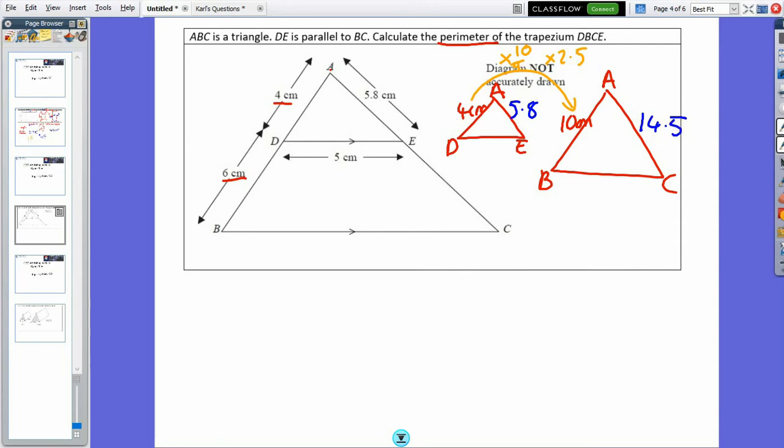And then along the bottom of D to E, I've got 5 centimeters. 5 centimeters times by 2.5 for my B to C along the bottom is going to give me 12.5.